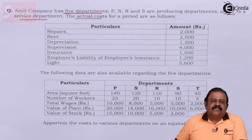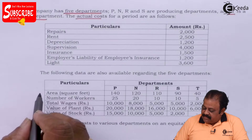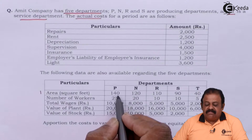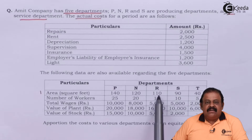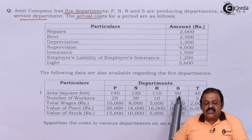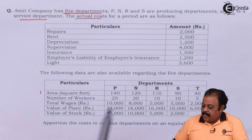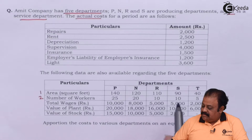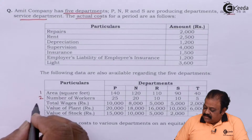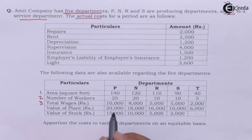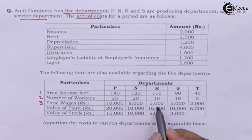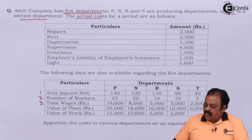The allocation parameters are: area in square feet — P: 140, N: 120, R: 110, S: 90, T: 40. Number of workers — 25, 20, 10, 10, and 5. Total wages — department P: 10,000; department N: 8,000; department R: 5,000; department S: 5,000.